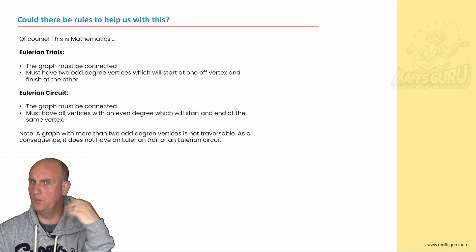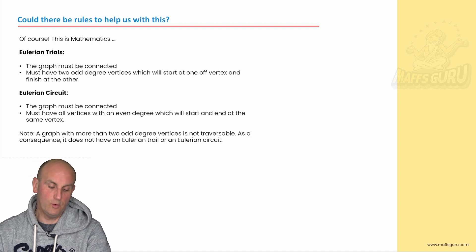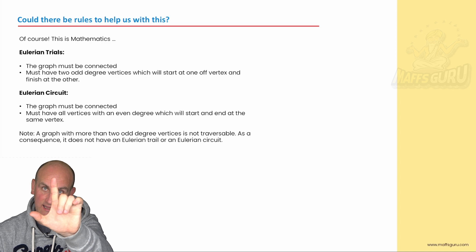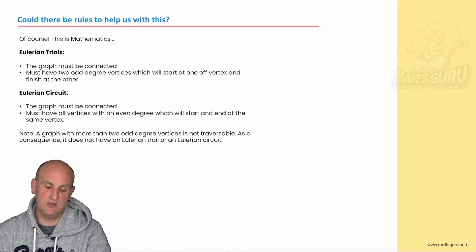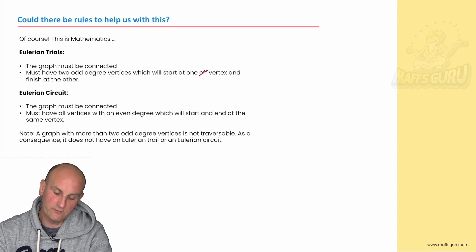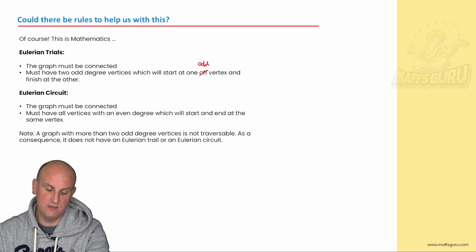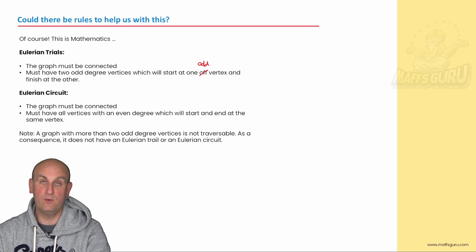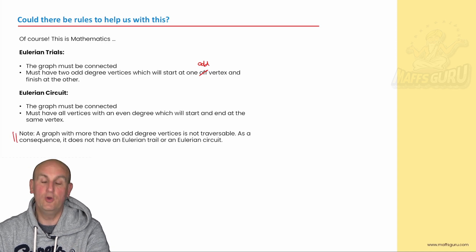Could there be rules to help us with this? Summary books — gold. Yes there is, it's maths. For Eulerian trails: first, the graph must be connected — there can be no loners. Second, it must have exactly two odd degree vertices; you will start at one odd vertex and finish at the other. For an Eulerian circuit: the graph must also be connected, but must have all vertices with an even degree, and it will start and end at the same vertex. Important note: a graph with more than two odd degree vertices is not traversable, and as a result it would have neither an Eulerian trail nor an Eulerian circuit.